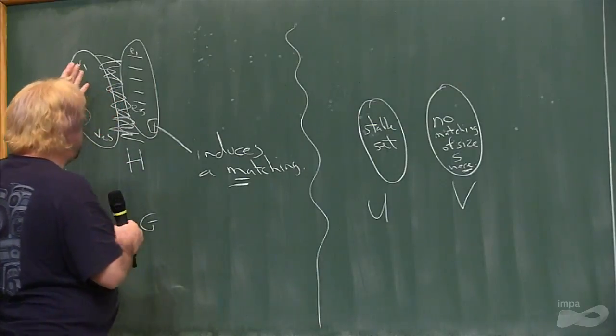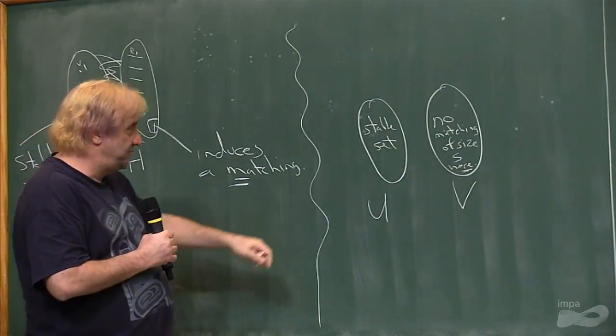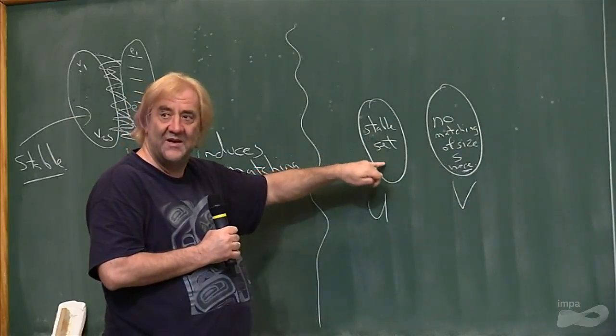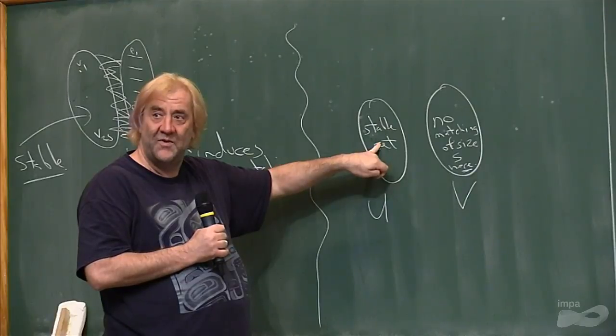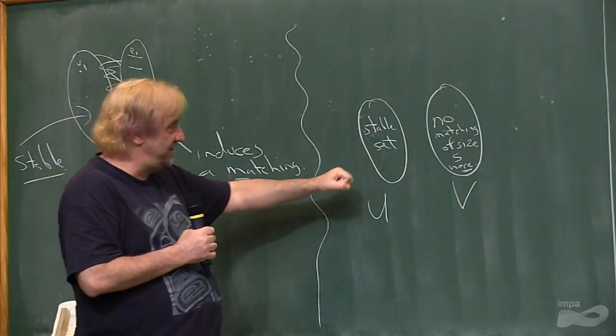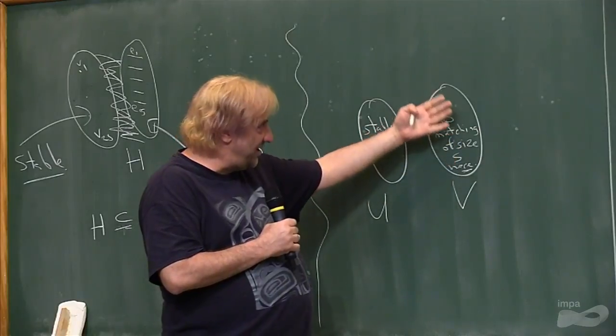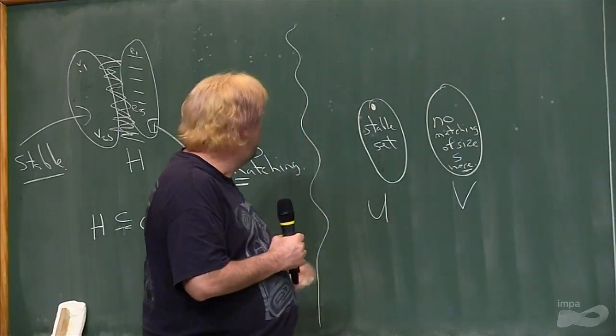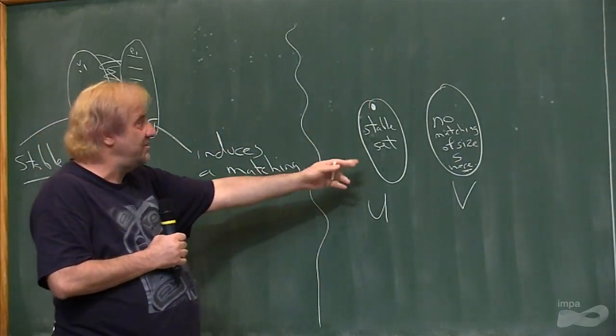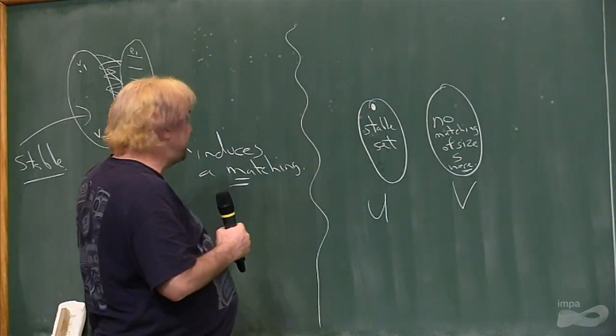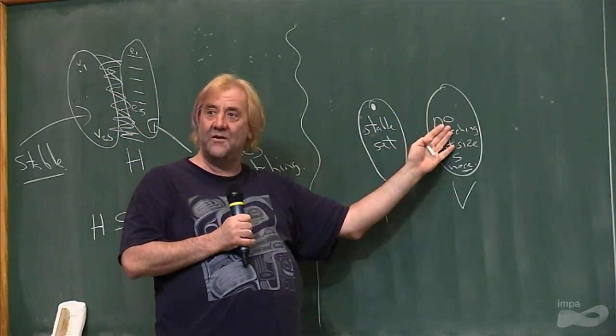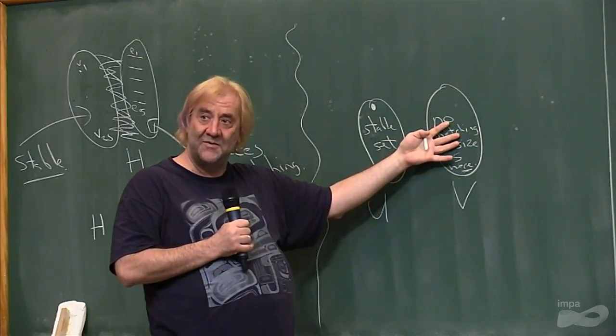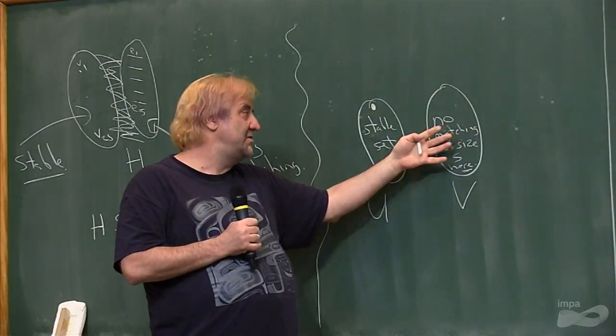Because there's all edges between the pieces, we can't have both parts intersecting here. So we could have one part that intersects. We can't have everything in here because there's no matching of size S here. We need a matching of size S. So we have to use a vertex over here. So one side uses a vertex here. They can't both use a vertex here. So the other side is completely over here.